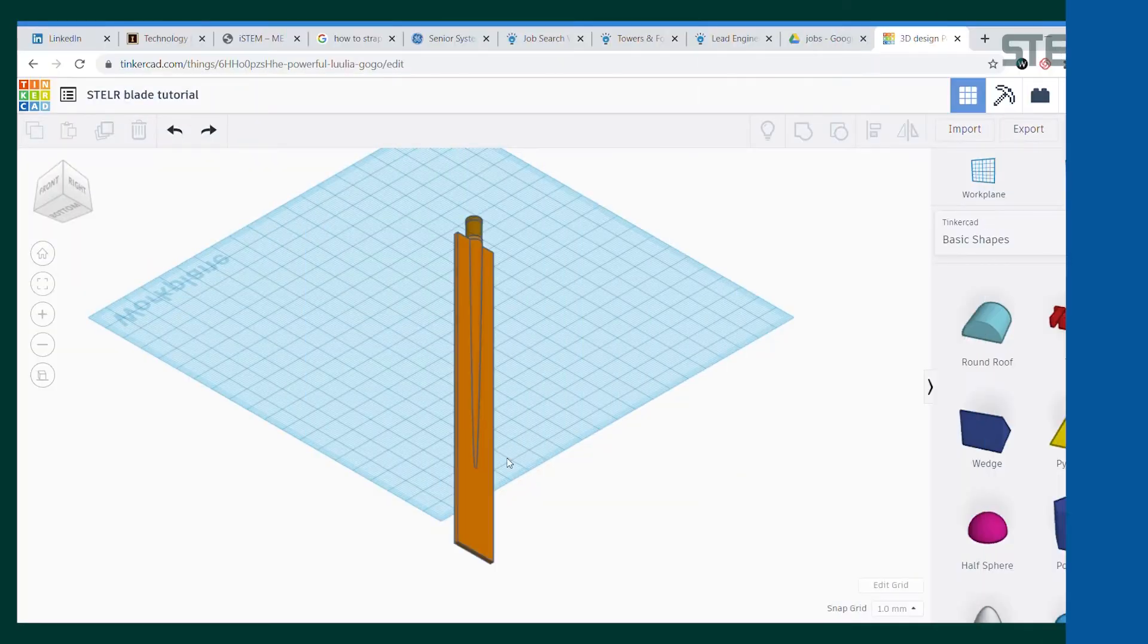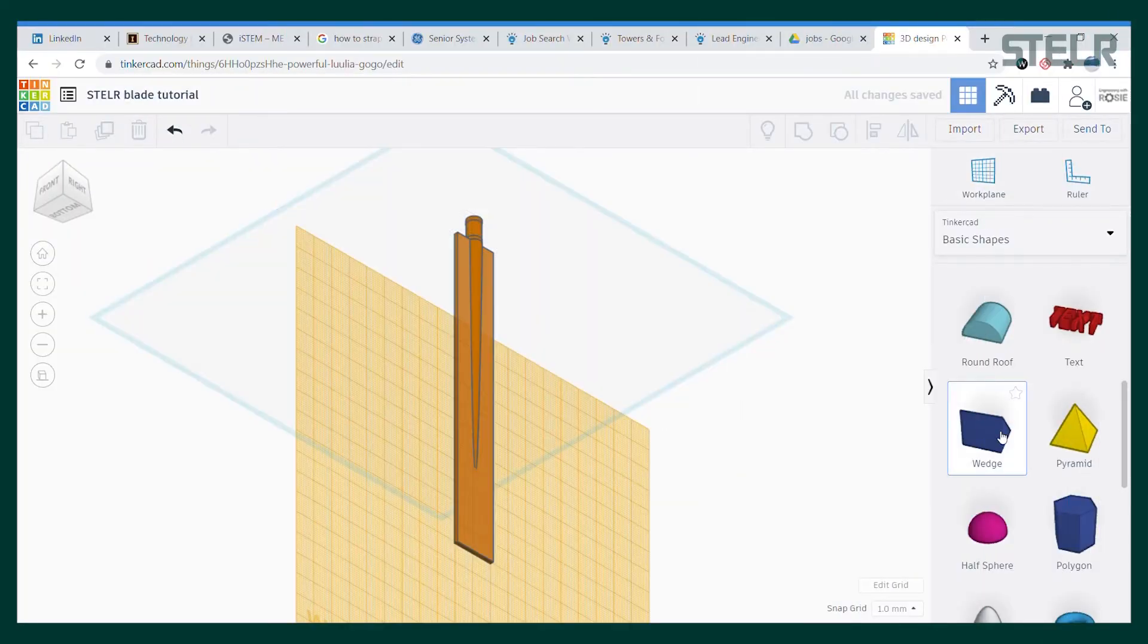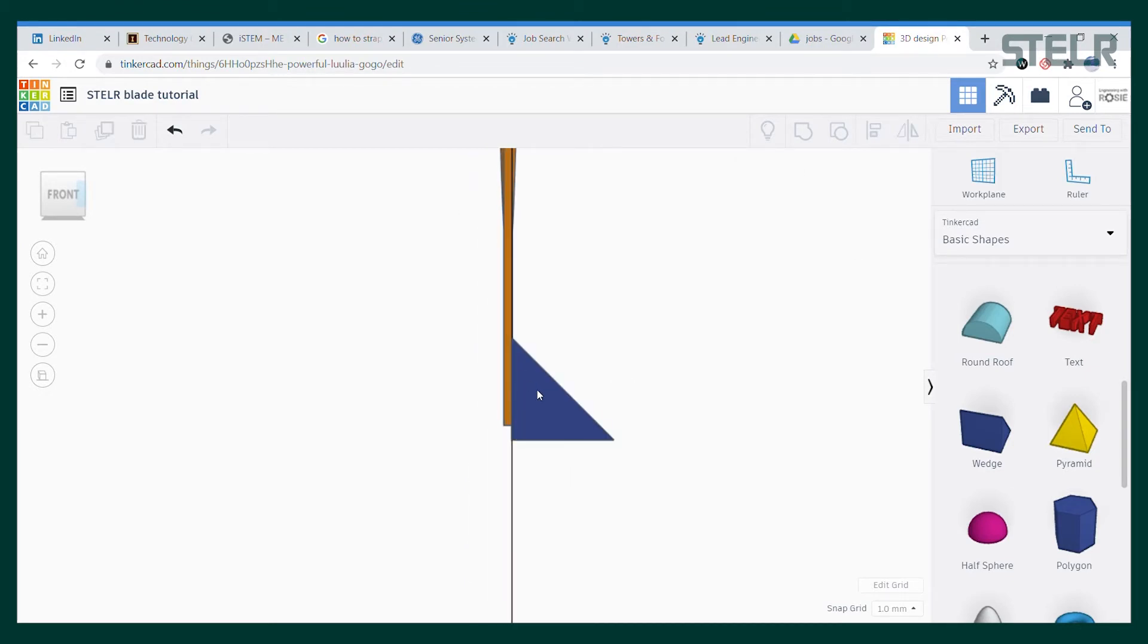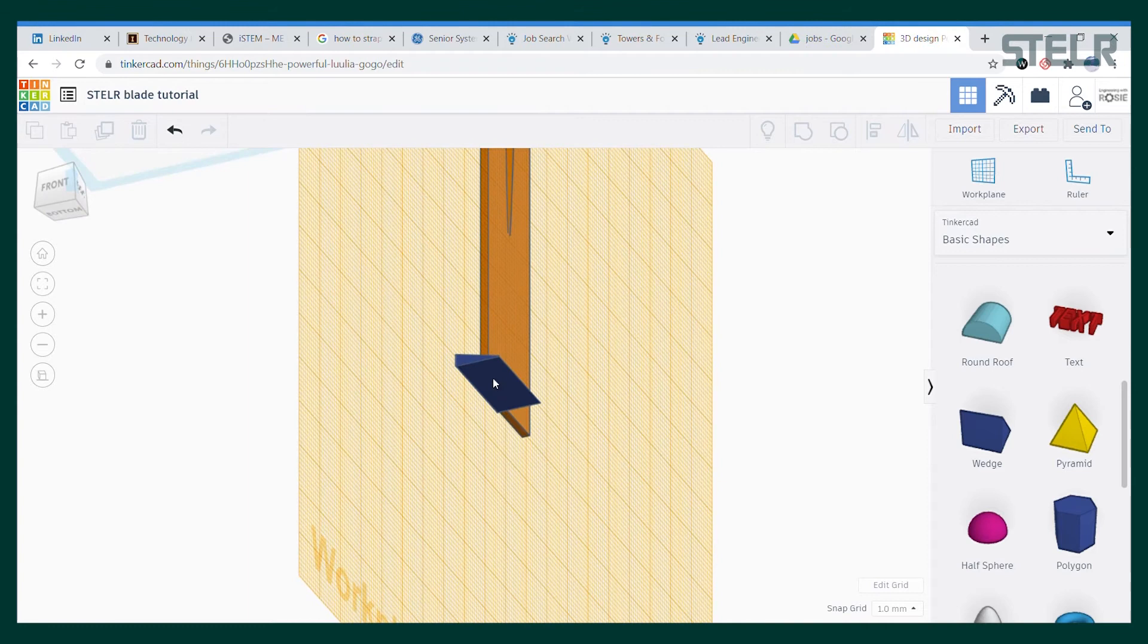There is a wedge shape in the library which is a right triangle just like we want, so I'll use that and make a work plane on the front of the blade and drag the wedge in. I change the dimensions to 2.5 millimeter height and 9.3 millimeter base. Then we need to rotate the triangle so it is in the direction that we want.